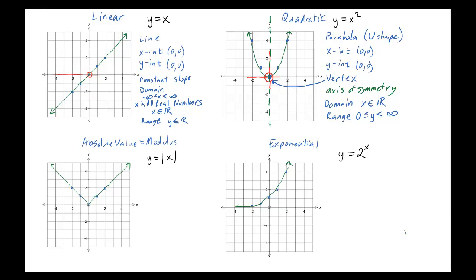Let's move on to absolute value, which is also called the modulus. The shape is simply a V-shape; the formula is y equals absolute value of x. Note that it's not curved like the quadratic. The x-intercept and y-intercept both occur at (0, 0). The special features are very similar to the quadratic: we have a vertex where it changes direction, and the axis of symmetry goes straight down the middle through that vertex.